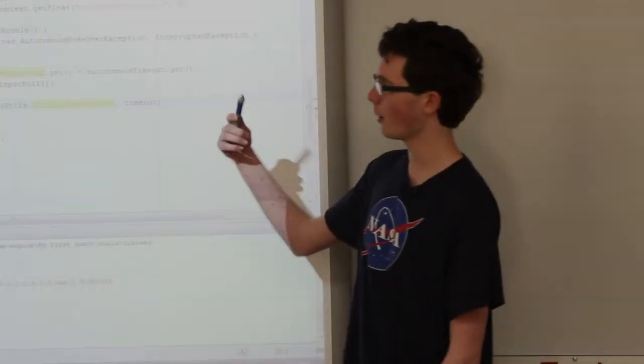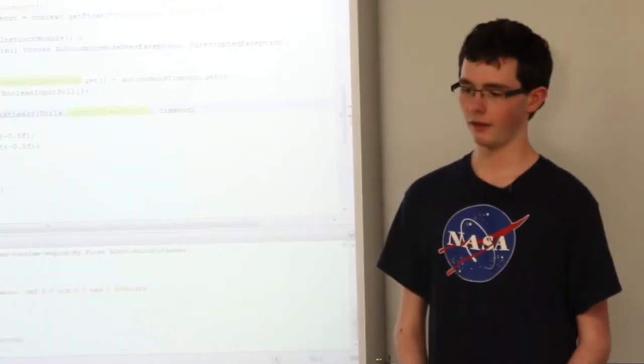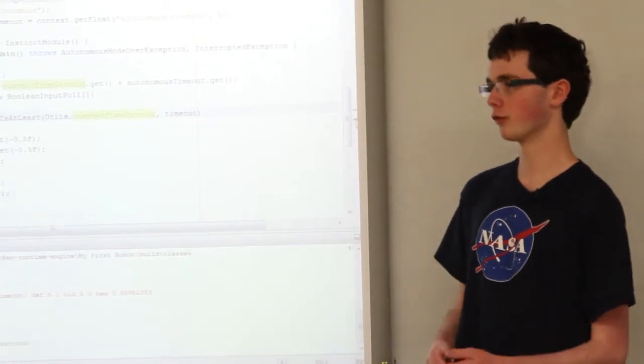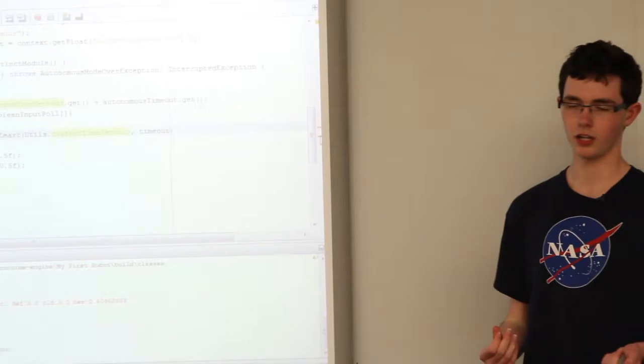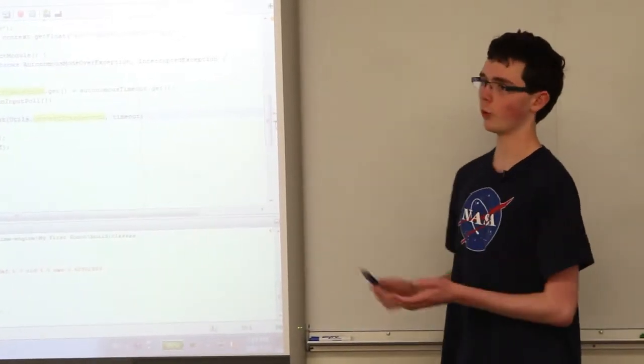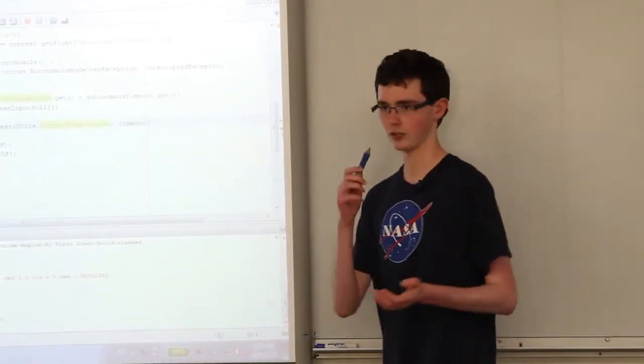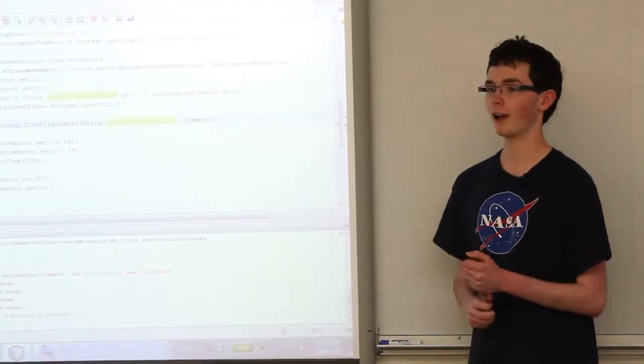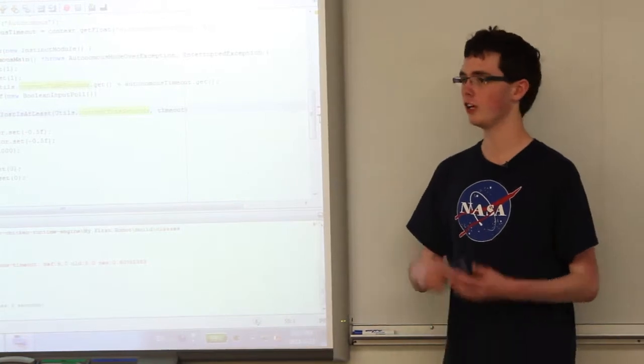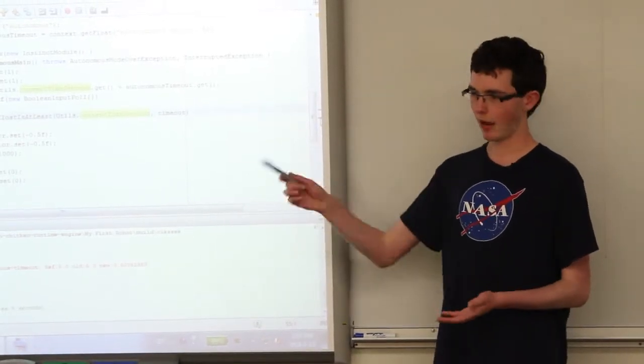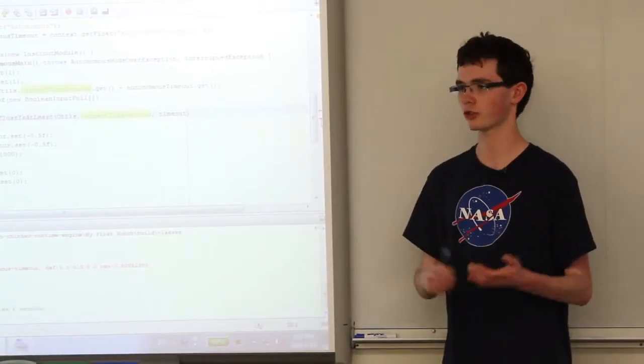Team 1540 created the Common Chicken Runtime Engine starting about a little over a year ago. I'd been on the team for two years and discovered that our code was always very unmaintainable, always not very good, and wanted to find a way to make that not happen again so we'd actually be able to maintain our code, use things between years, and have everything work without quite so much work.